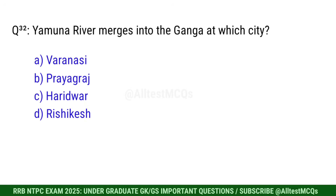Q32. Yamuna river merges into the Ganga at which city? Correct option is B. Prayagraj.